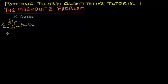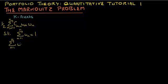We have to minimize this variance subject to the constraint that the sum of all weights in the portfolio must be equal to 1, and that the weighted average return based on weight and return of each security in the portfolio must be equal to the expected return on the portfolio, denoted by R-bar. W_N and R-bar_N denote the weight and return of security N in the portfolio.